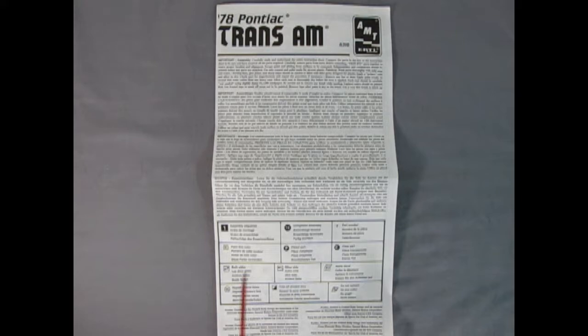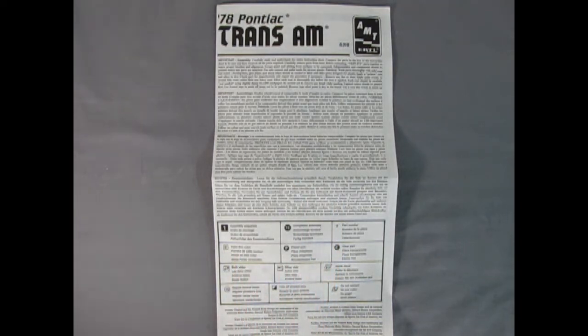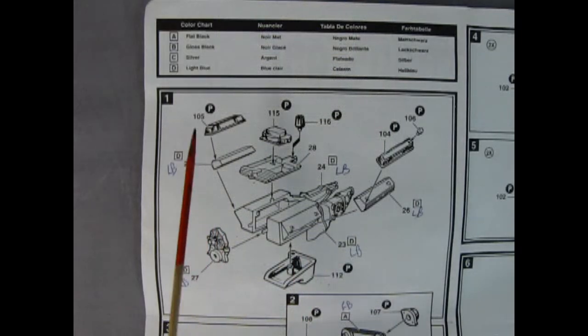Here we have our instruction sheet which is one of those great big foldout styles. We have our important details up here in many different languages as well as all the little symbols we will see as we build the model kit. Just above our first panel we have this nice color chart with all the colors marked by lighter as well.